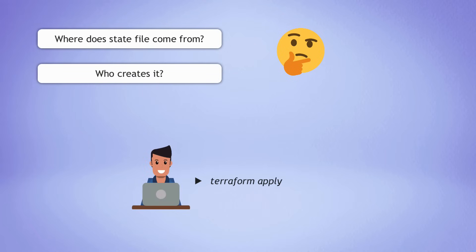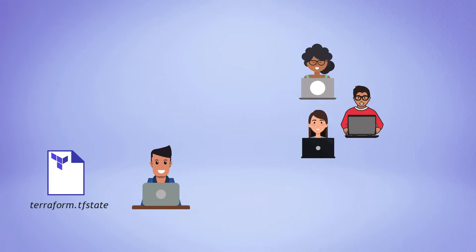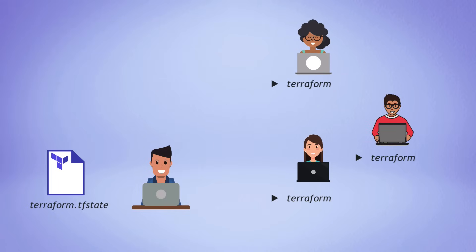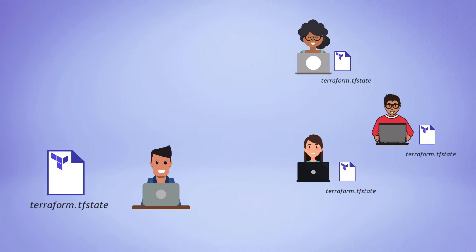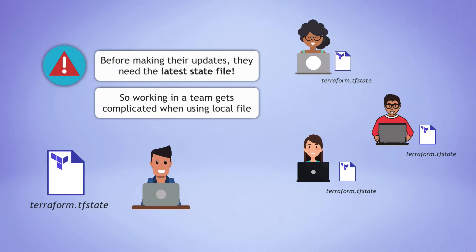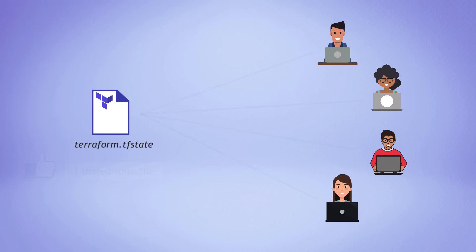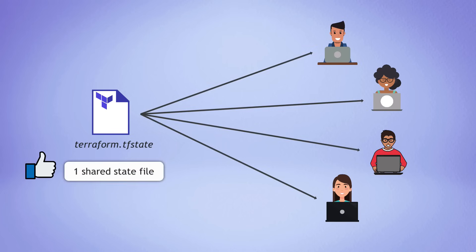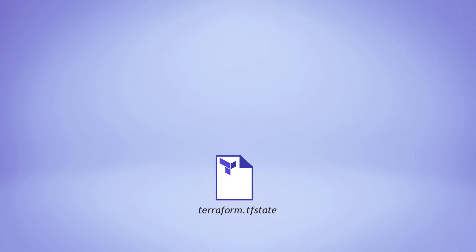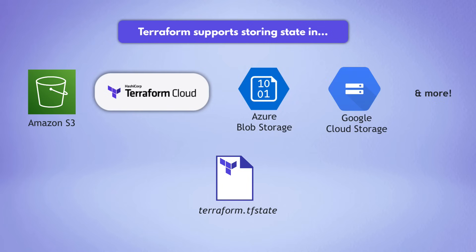Where does this state file actually come from? When you first execute the Terraform apply command, Terraform will automatically create the state file locally. But what if you're working in a team? Other team members also need to execute Terraform commands and will need the state file. Every team member will need the latest state file before making their own updates. So the second best practice is to configure a shared remote storage for the state file. In practice, remote storage backend options include Amazon S3 bucket, Terraform Cloud, Azure, Google Cloud, and you can configure Terraform to use that remote storage as a state file location.